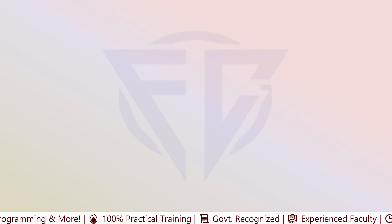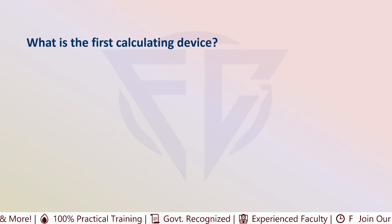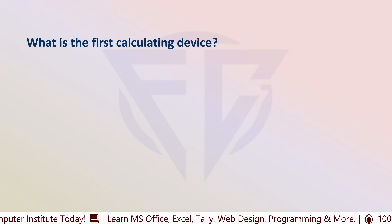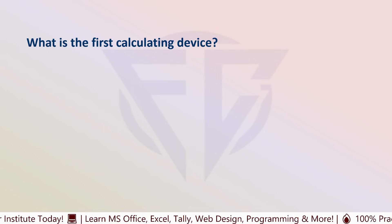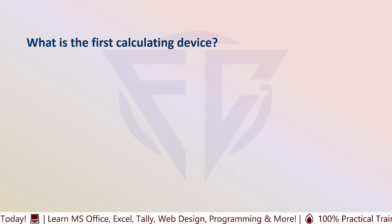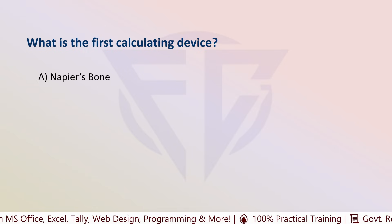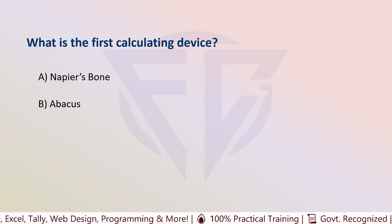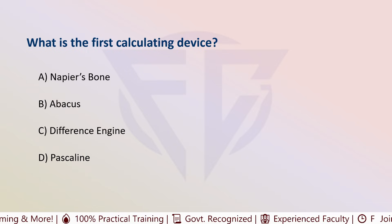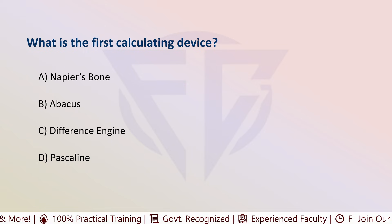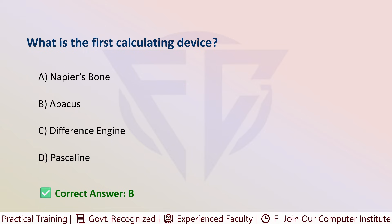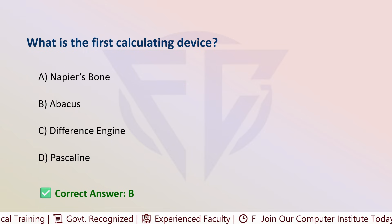The next question is: what is the first calculating device? Options are: A) Napier Bones, B) Abacus, C) Difference Engine, and D) Pascaline. The correct answer is B, that is Abacus.